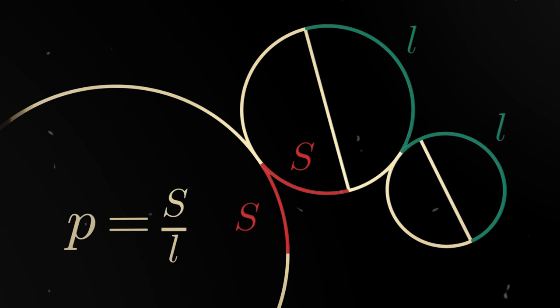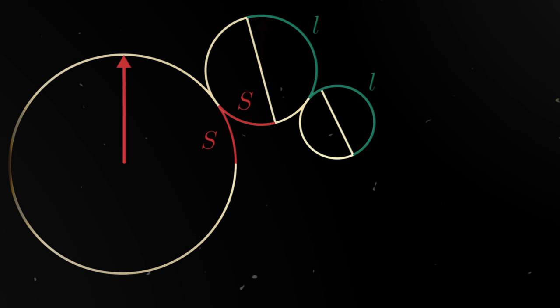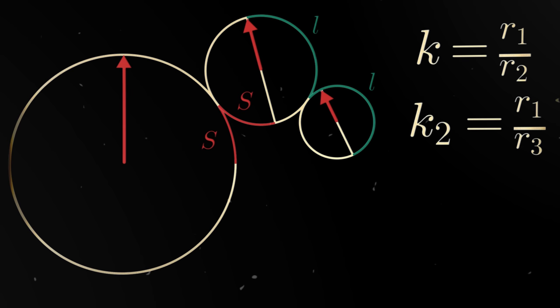So we have four parameters on which the final curve depends. The ratio of the radius of the first circle to the second. The ratio of the radius of the first circle to the third. The ratio of the paths. And the distance to the drawing point.